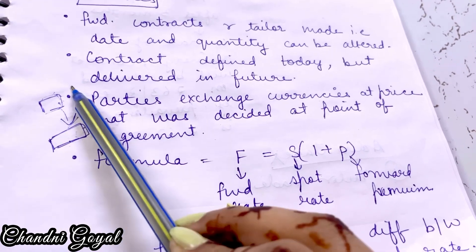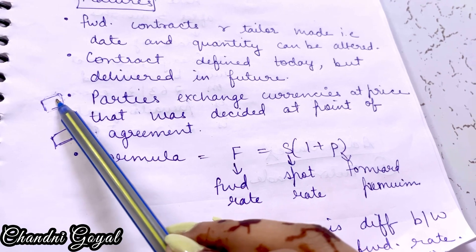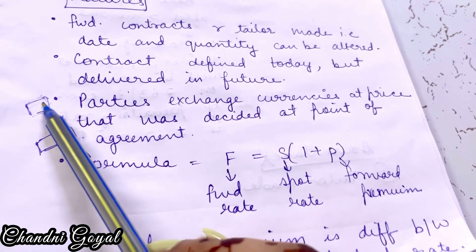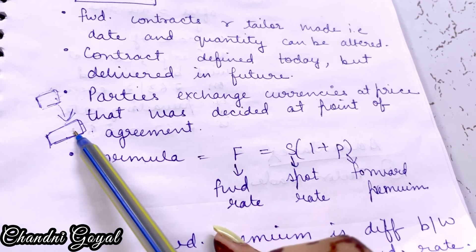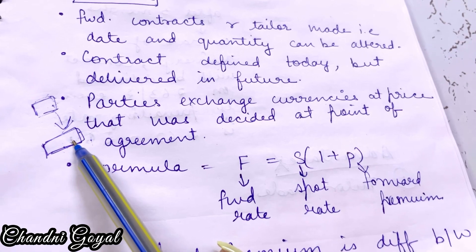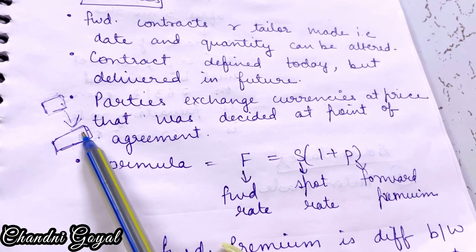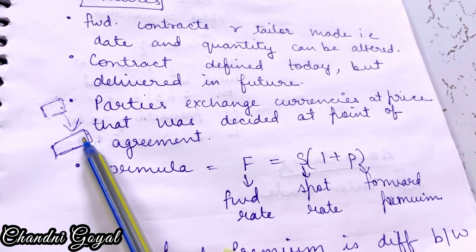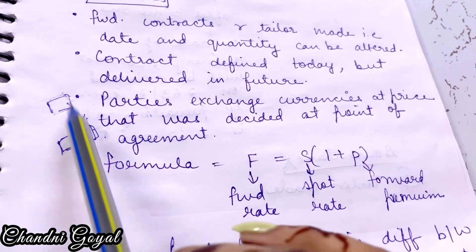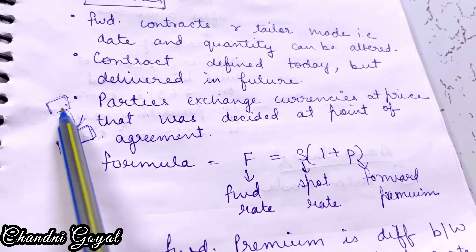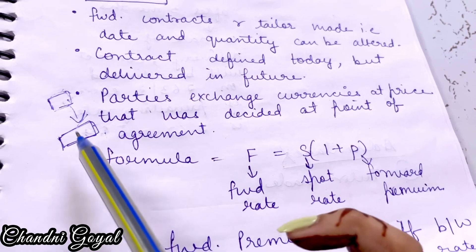This means the parties set the price in advance. So when the time period is up and they need to exchange currencies, the price that was already set in the past is the one that will be honored at the time of exchange.